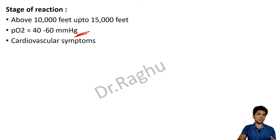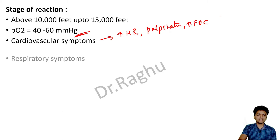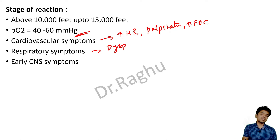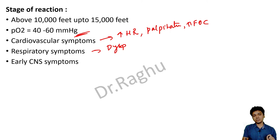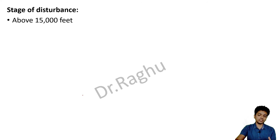In the stage of reaction, the person can get cardiovascular symptoms due to sympathetic stimulation — increased heart rate, palpitations, increased force of cardiac contraction. There are also respiratory symptoms like dyspnea, and early CNS symptoms can begin. This stage of reaction occurs from 10,000 to 15,000 feet.